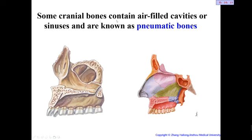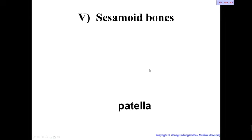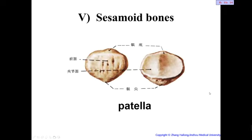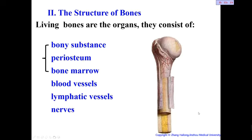Some cranial bones contain air-filled cavities called sinuses — these are called pneumatic bones. For example, the maxilla contains a paranasal sinus filled with air, which functions to reduce the weight of the head. Finally, the patella is an example of a sesamoid bone — it is a very small, round bone. The patella, located in front of the knee joint between the femur and tibia, is the largest sesamoid bone in the body.